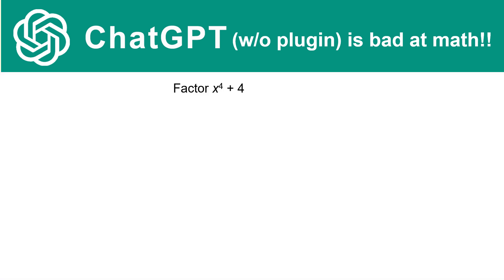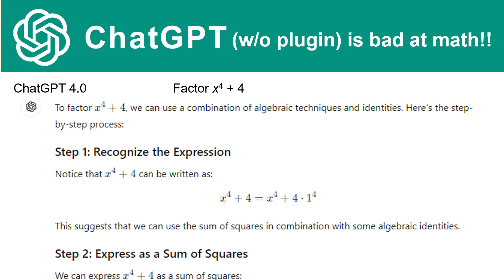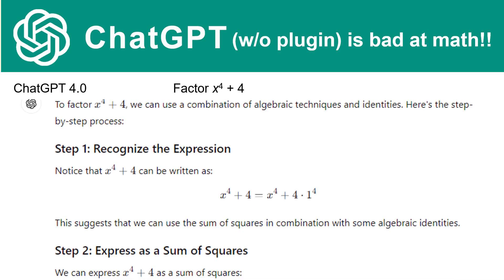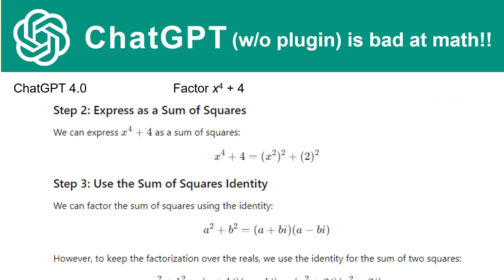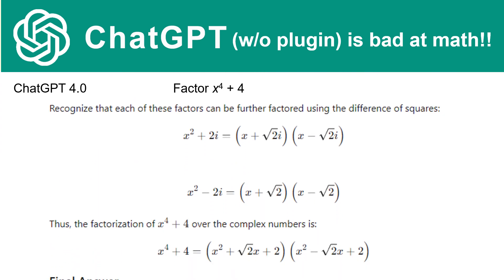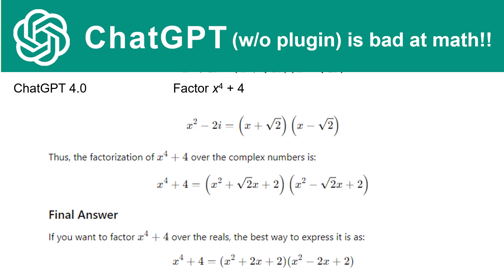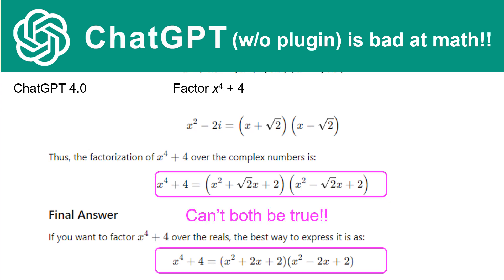For example, let's factor x⁴ + 4 using ChatGPT 4.0, and notice that it gives us this result and it does it in step one, step two, step three, and there you can see that it gives us this final answer. But notice its final answer is not the same as the answer immediately above, so they can't both be true. And this step that it did is completely wrong: (x + √2)(x - √2) is x² - 2, not x² - 2i.